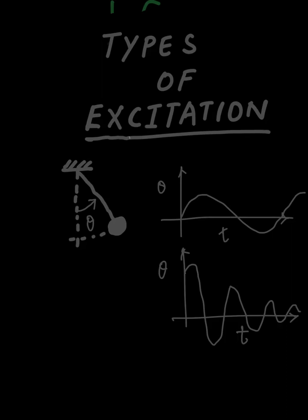If you observe this plot carefully, there is a definite change with respect to time. These kinds of responses are called transient responses, because the response changes as time progresses and will die down after a while. So responses against initial excitations are transient in nature. This is one set of excitations — initial excitations. Now let's look at the next type.